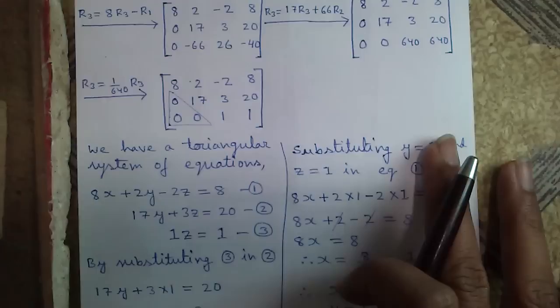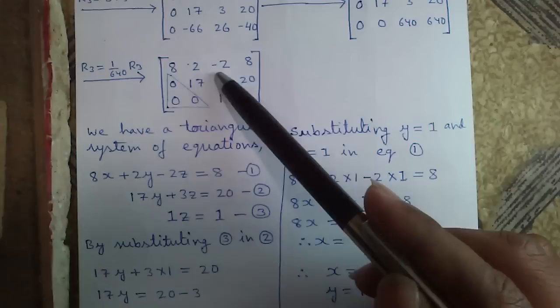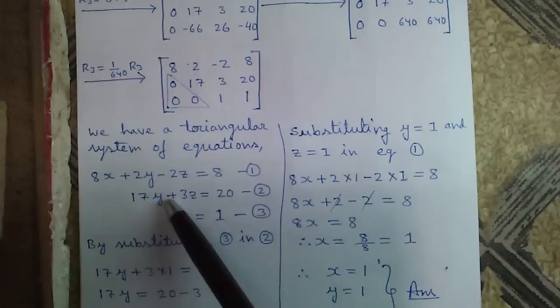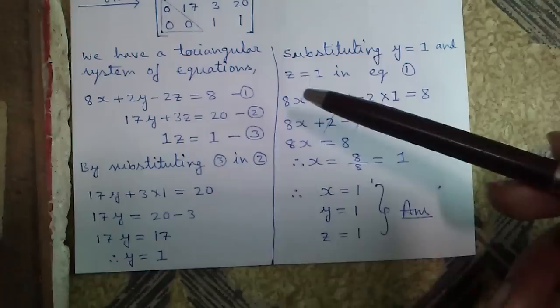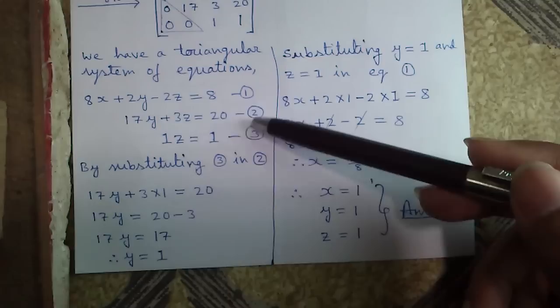Now we have a triangular system of equations: 8x plus 2y minus 2z equals 8. This is equation 1, this is equation 2, and this is equation 3. Now we will apply back substitution — we will put the values of equation 3 into equation 2, and then put the result into equation 1.